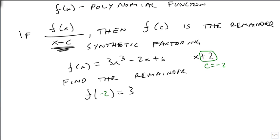So that's 3 times negative 2 cubed minus 2 times negative 2 plus 6. Well, negative 2 cubed is negative 8. Negative 8 times 3 is negative 24, plus 4, plus 6, and we get negative 14.